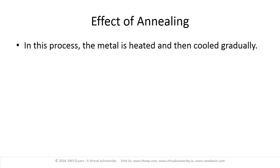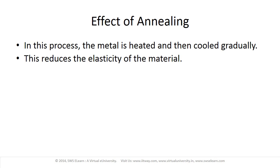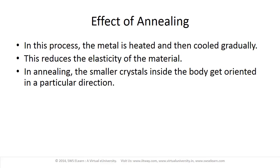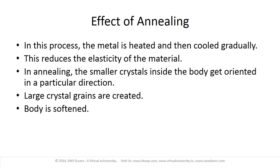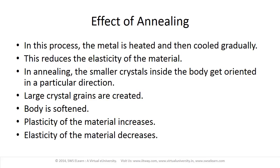Now let us consider the effect of annealing. In the process of annealing, the metal is heated and then cooled gradually. This reduces the elasticity of the material. Due to annealing, the smaller crystals present inside the body get oriented in a particular direction, creating large crystal grains. This softens the material — the plasticity of the material increases but the elasticity decreases.